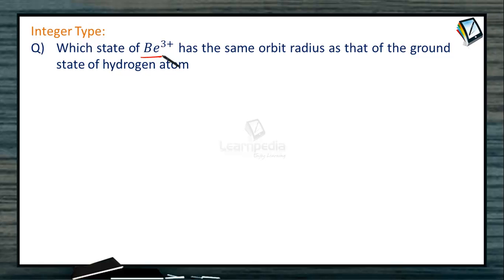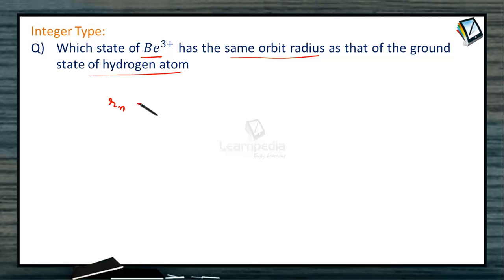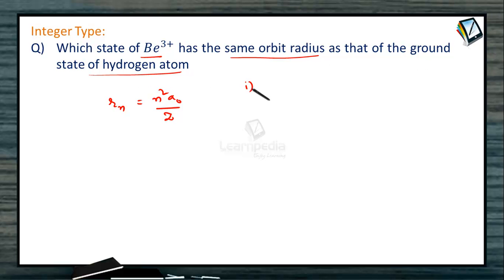Which state of beryllium 3 plus has the same orbit radius as that of the ground state of hydrogen atom?